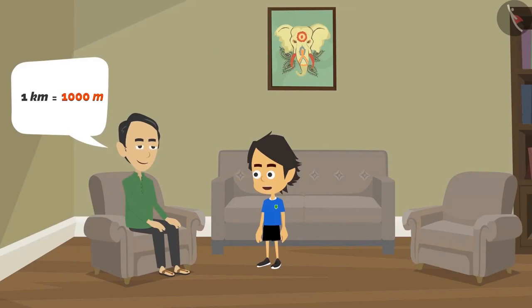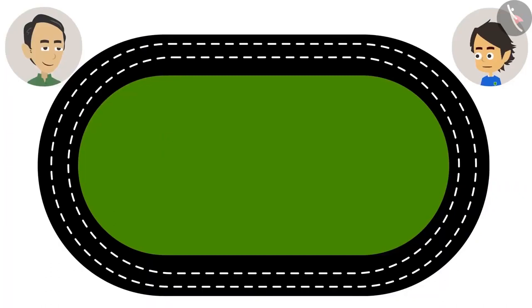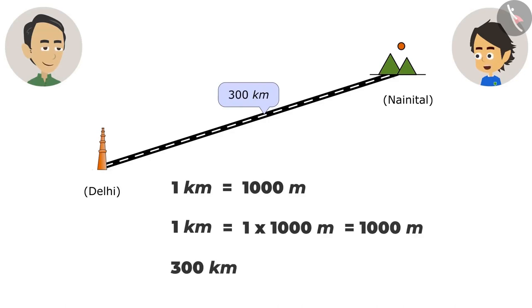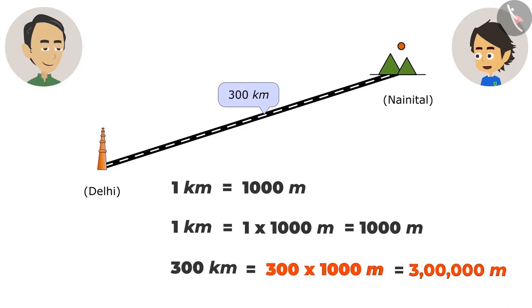A thousand meters is a lot. Our school sports competition had a 1,000-meter race, so the people who ran in it ran one kilometer. Nainital is 300 kilometers away — that's why we are going by train. If 1 kilometer equals 1,000 meters, how many meters away is Nainital? Multiply by 1,000 to convert kilometers into meters: 300 × 1,000 = 3 lakh meters.